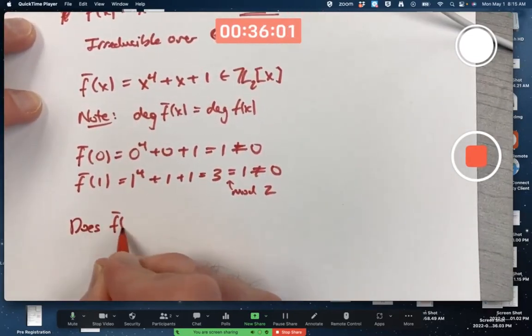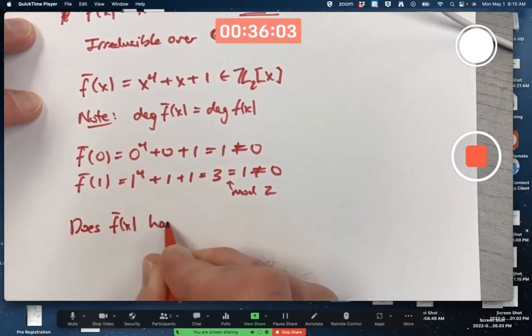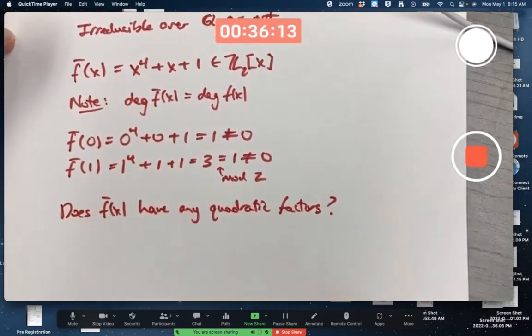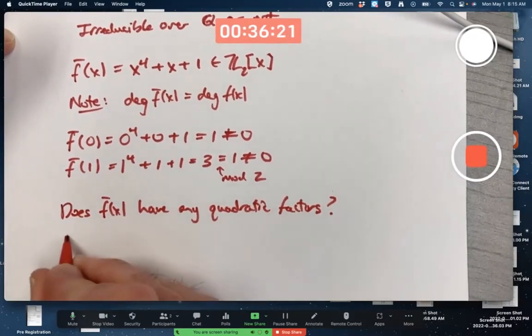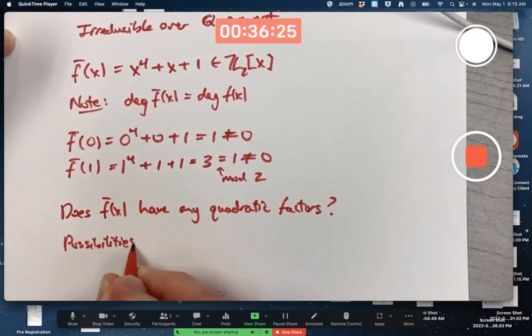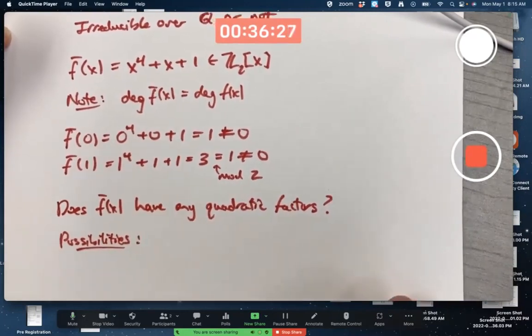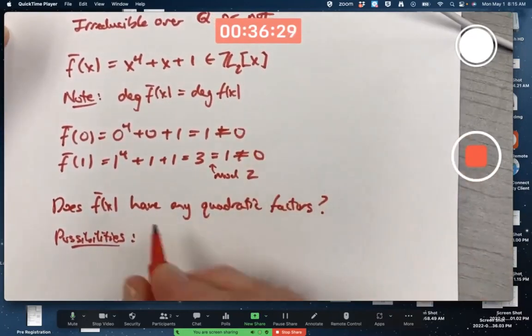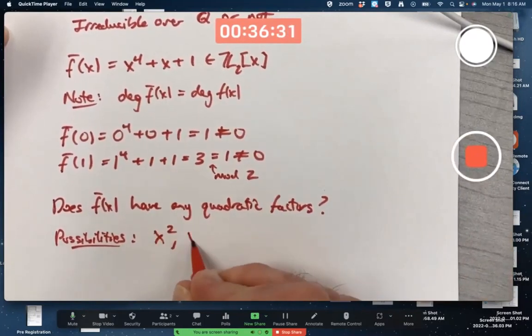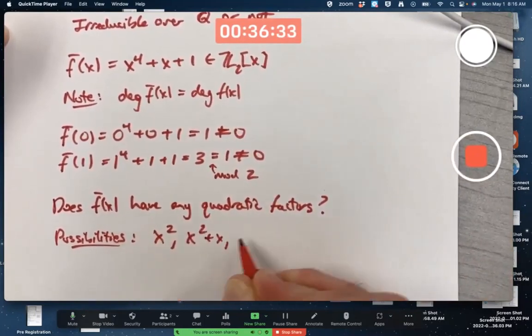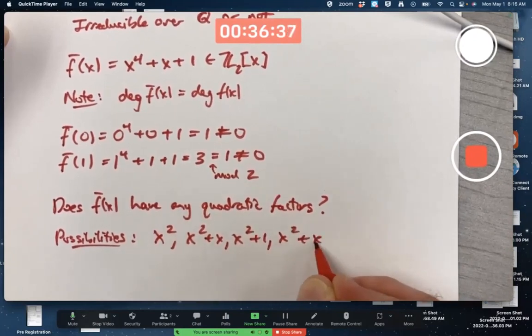Does f bar of x have any quadratic factors? That's just a matter of testing. There's a very limited number of quadratic factors to test. The possibilities are mod 2, we're thinking in Z_2[x] here: x squared, x squared plus x, x squared plus 1, and x squared plus x plus 1.